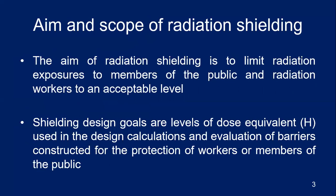What are the aim and scope of radiation shielding? The aim of radiation shielding is to limit radiation exposure to members of the public and radiation workers to an acceptable level — not zero. The scope is to have a shielding design goal, which are levels of dose equivalent used in the design calculation and evaluation of barrier thickness constructed for protection of workers or members of the public.